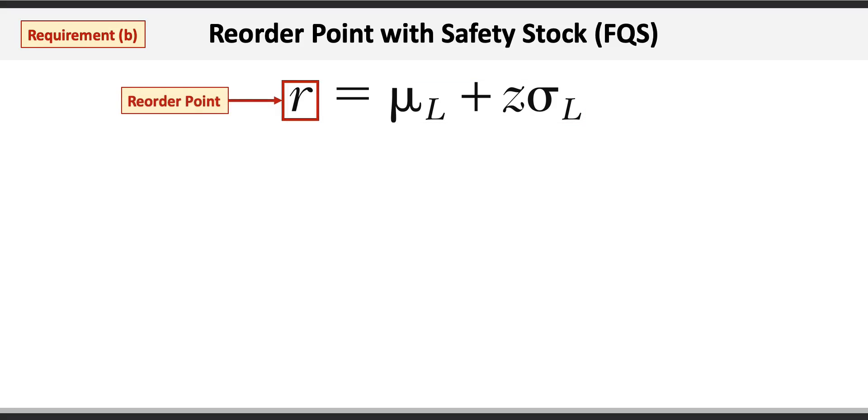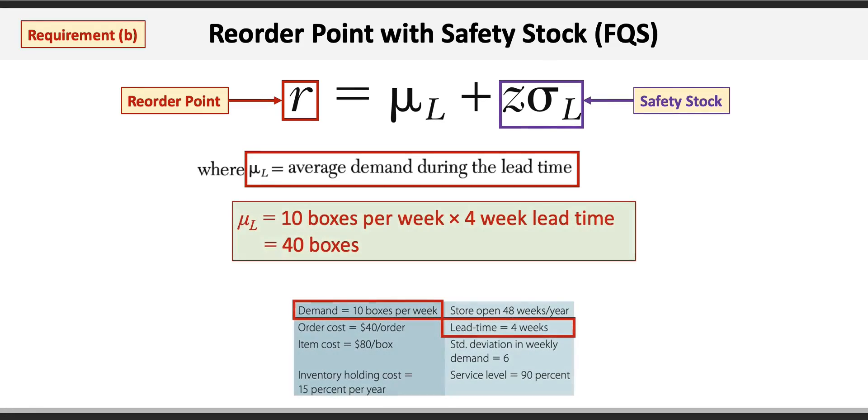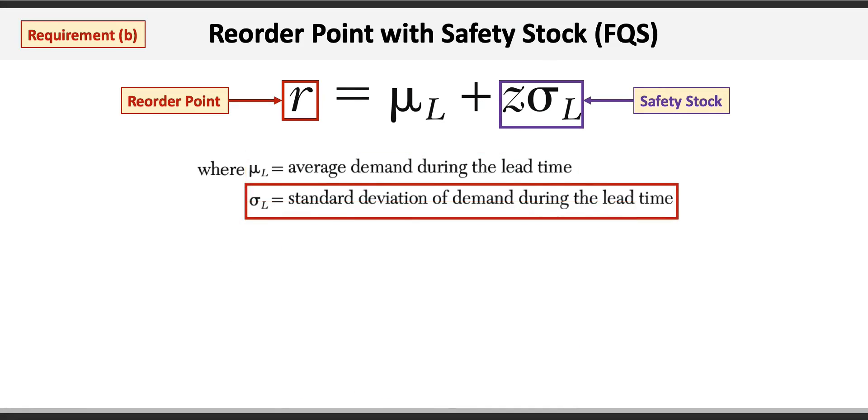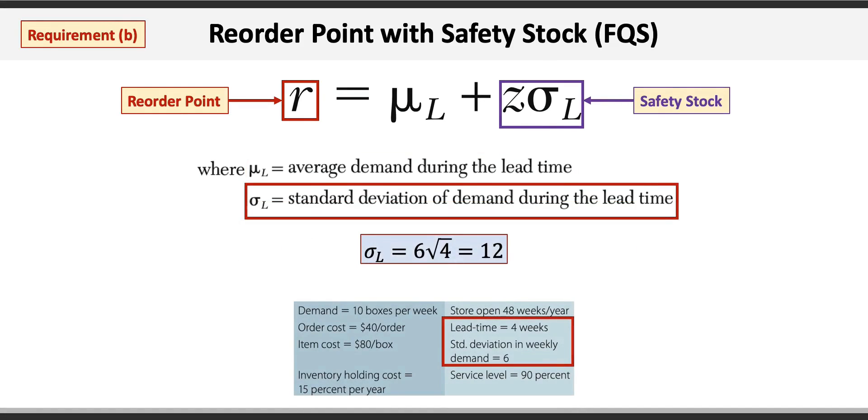R is the reorder point and Z times sigma_L is the safety stock. In this formula, the average demand during the lead time is 10 boxes per week times the four-week lead time, which equals 40 boxes. Sigma_L is the standard deviation of demand during the lead time, which is the standard deviation of 6 times the square root of the four-week lead time, which equals 12.